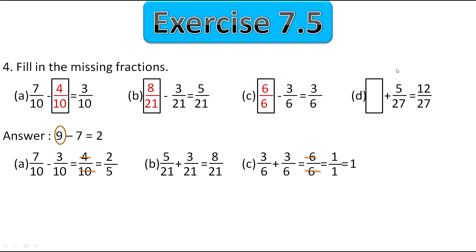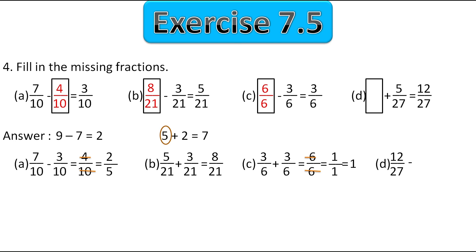In part D we have a plus sign, so we take another example: 5 plus 2 equals 7, so to find 5 we subtract 2 from 7. Same way, we subtract 5 upon 27 from 12 upon 27: 12 upon 27 minus 5 upon 27 gives 7 upon 27.